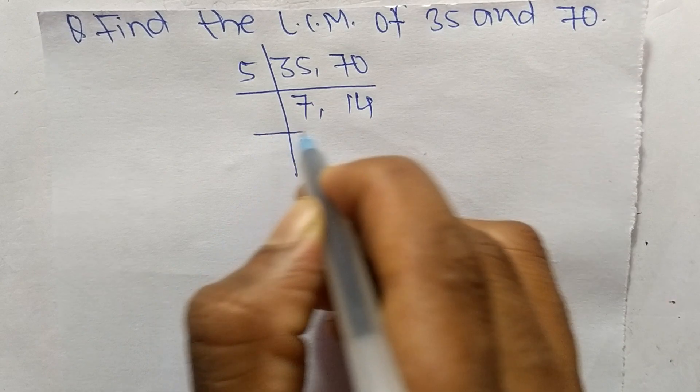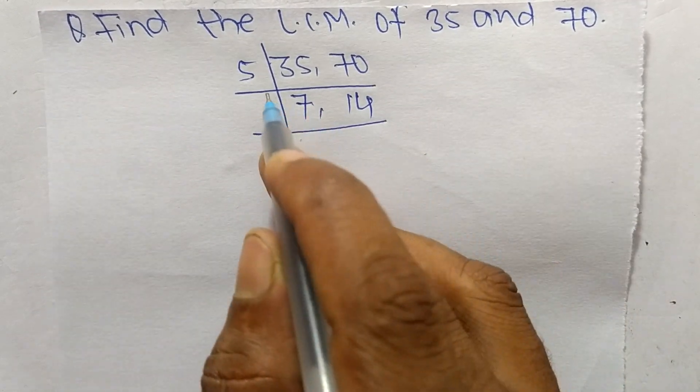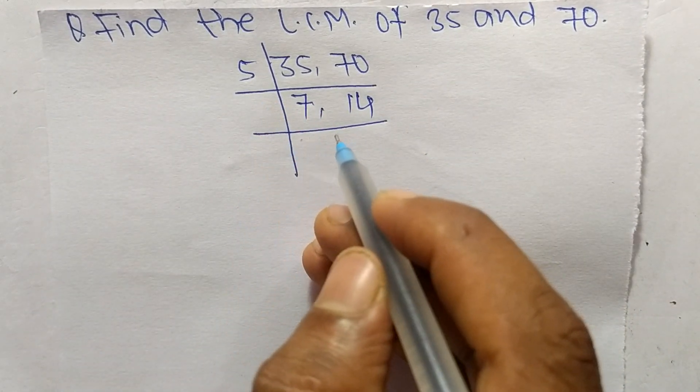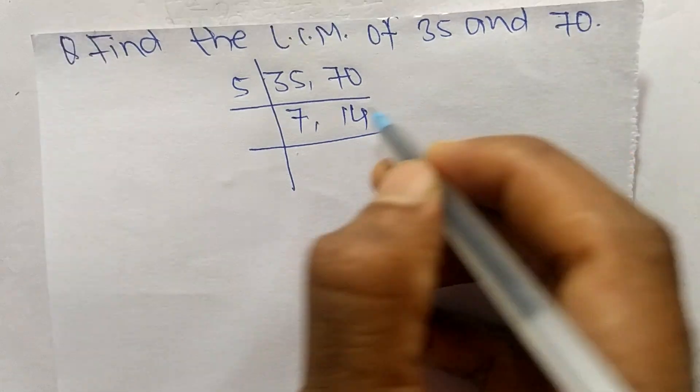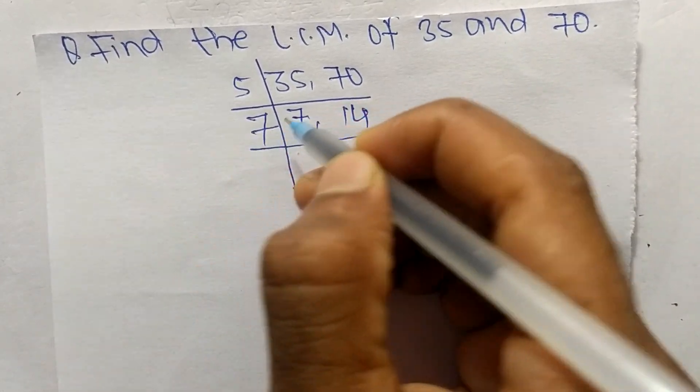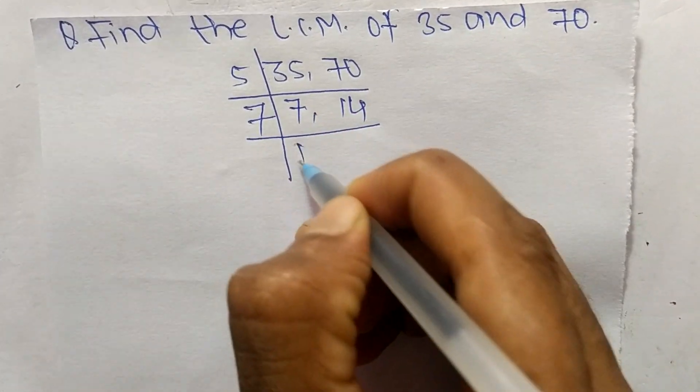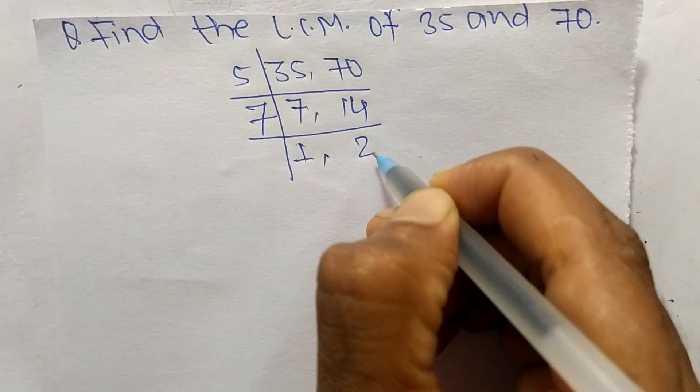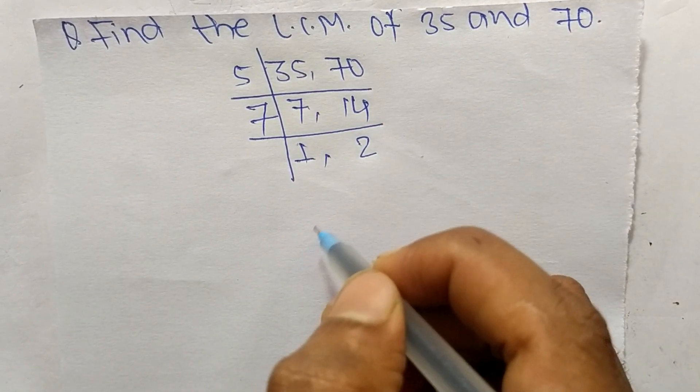We choose the number greater than 5 that can exactly divide 7 and 14, so the number is 7. 7 times 1 means 7 and 7 times 2 means 14.